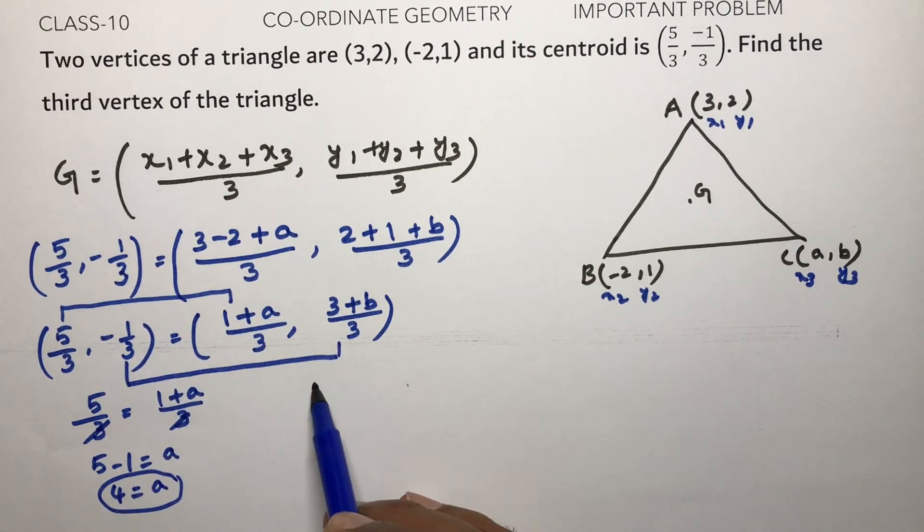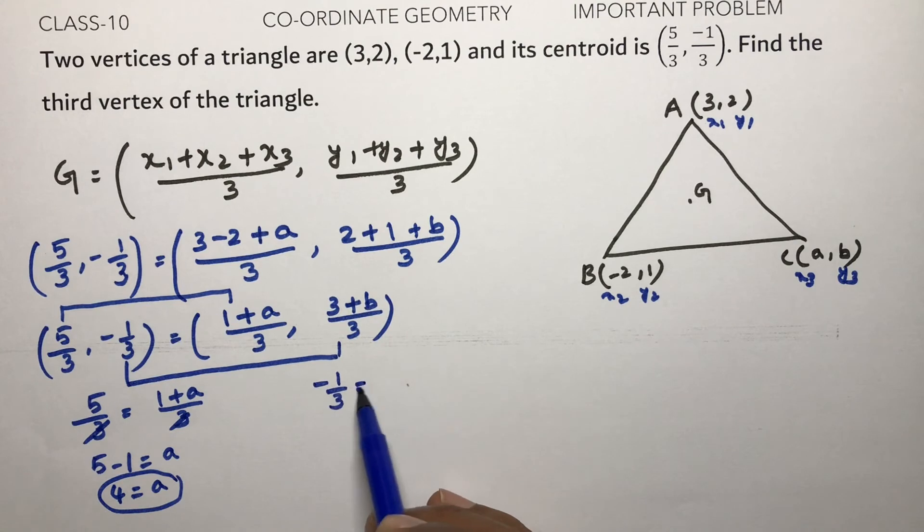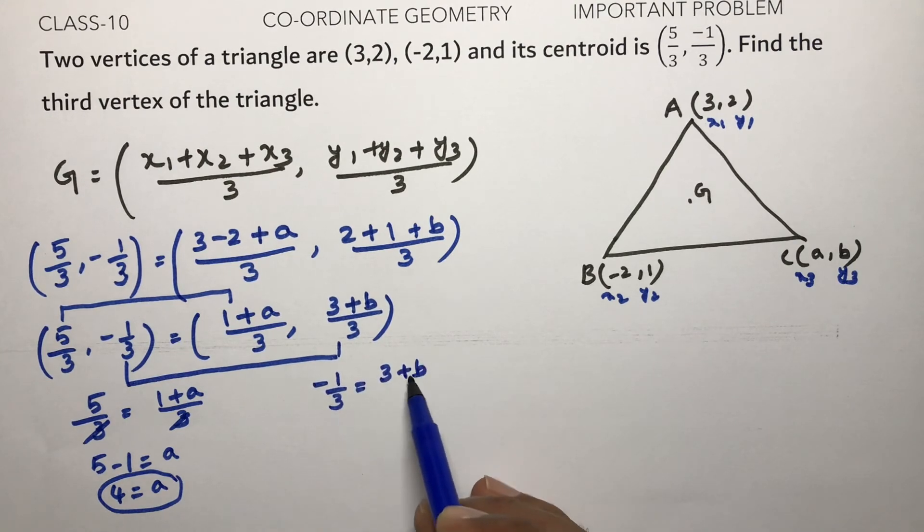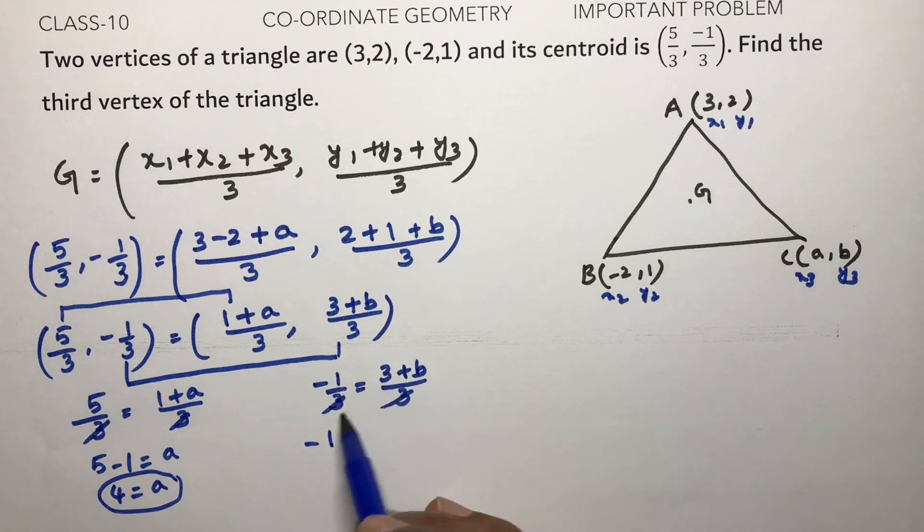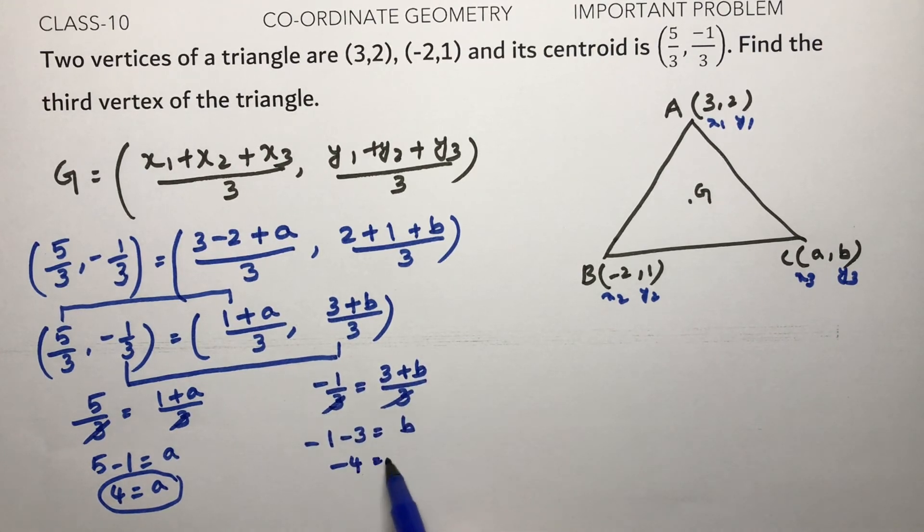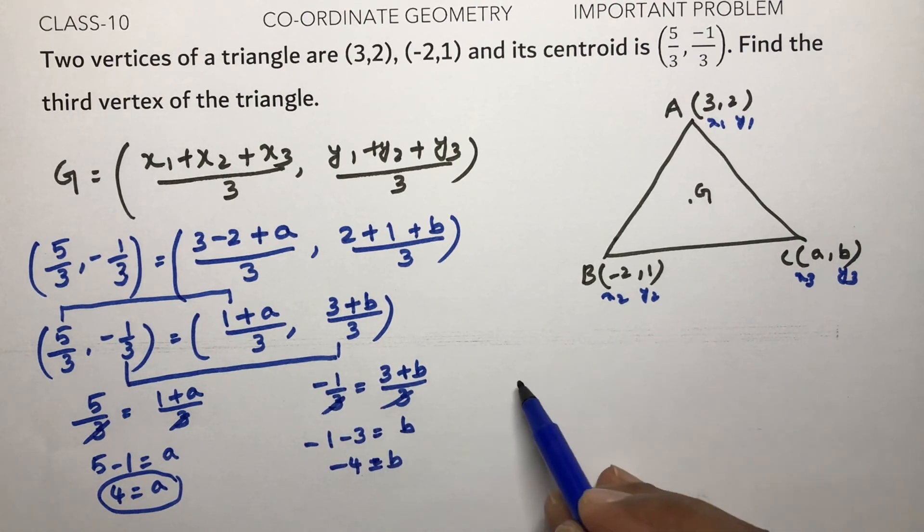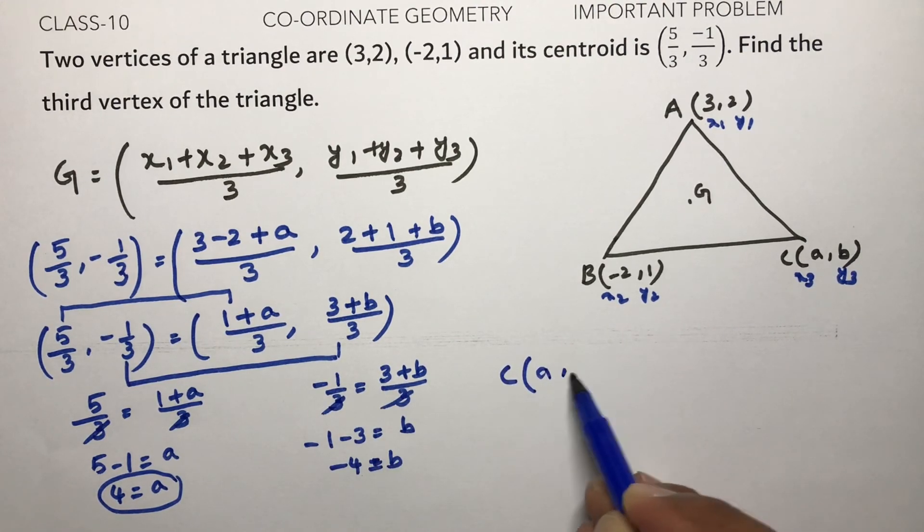Now if we equate ordinate value with ordinate, -1/3 equals (3 + b)/3. 3, 3 cancel. So -1, and transposing +3 will get -3 equals b, so -4 equals b.